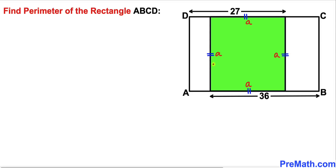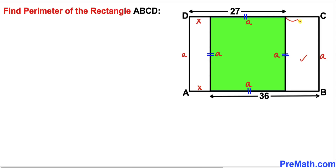Now since we are dealing with the rectangle on the left-hand side, these two lengths are equal — if this is A, this length has got to be A as well, and likewise this side length is going to be A as well. Let's call this top side length X, then this side length is going to be X as well. Now let's focus on the rectangle on the right-hand side — let me label this side length as Y units, then this side length is going to be Y as well.